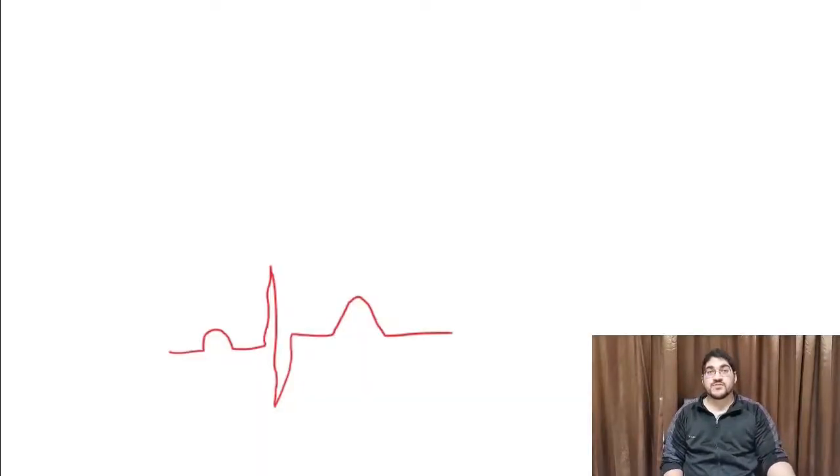Last time we spoke about the P wave and what information we can get from it. Today we're talking about the P-R interval, which is this section here on an ECG, from the beginning of the P wave right to the start of the QRS complex.